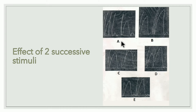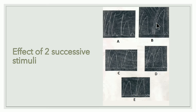Graph B: the second stimulus is applied in the second half of the latent period. The height of the curve is increased compared to normal. This is because the first and second stimuli have summated — this is known as summation of stimuli. So when the second stimulus falls in the second half of the latent period, the height increases due to summation of stimuli.